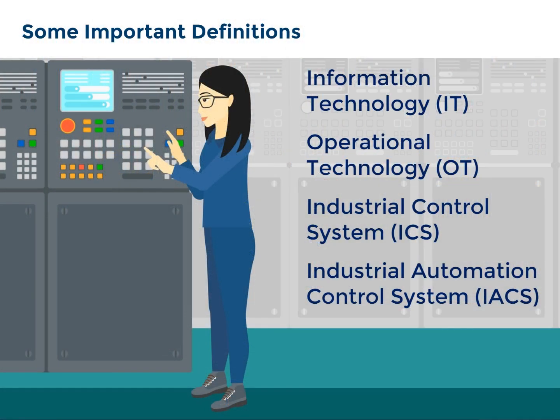Some important definitions. As CISOs, we need to understand what we are talking about if we are to communicate with our plant engineers and control room operators who may not have much time to stop and explain things. There are differing interpretations of terms like information technology (IT), operational technology (OT), industrial control systems (ICS), and industrial automation and control systems (IACS). Of all the terms you may find, your engineers will understand you if you use the latter two — ICS and IACS. I will focus on explaining IT, OT, and ICS. While IACS is similar to ICS, it is a term used in the ISA 62443 standard, which some may not be familiar with.